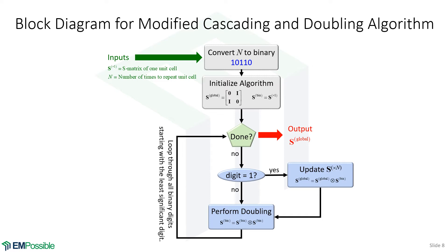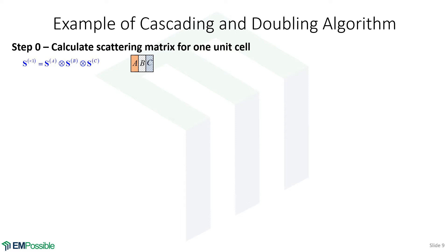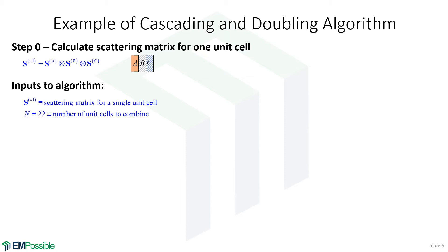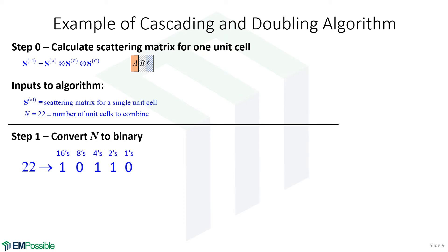Here's an example. Step zero is the input: we build a scattering matrix describing our unit cell — shown here as three layers, but it could be more, like 50 layers. The other input is the number of unit cells to combine. For this example it's 22 unit cells — not a power of two; powers of two nearby would be 16 or 32. The algorithm begins by converting N = 22 to binary, giving us 10110.